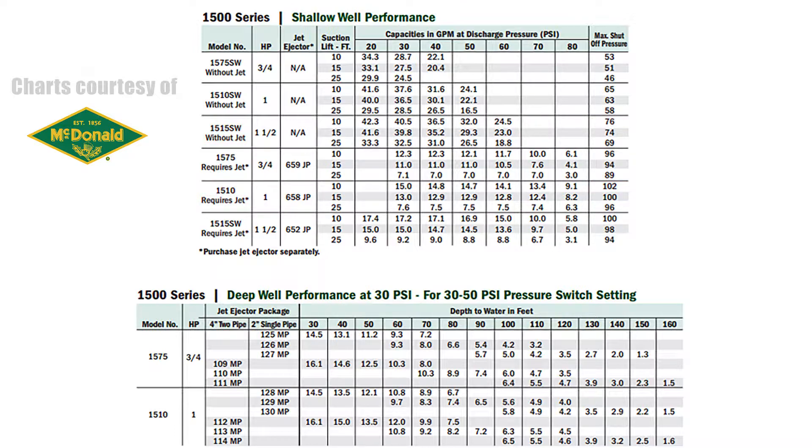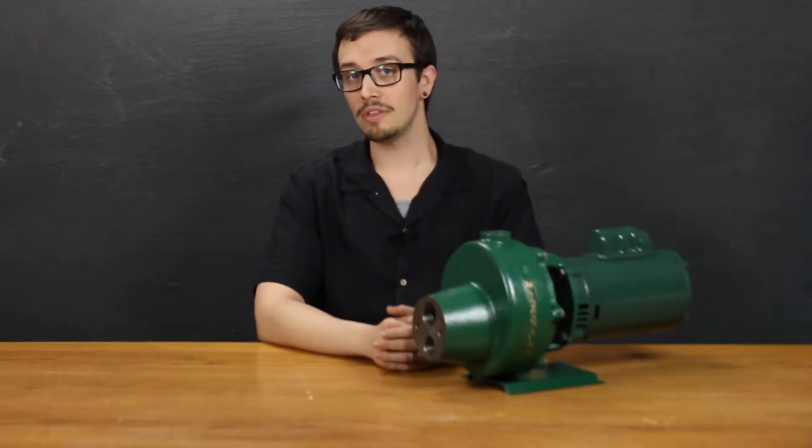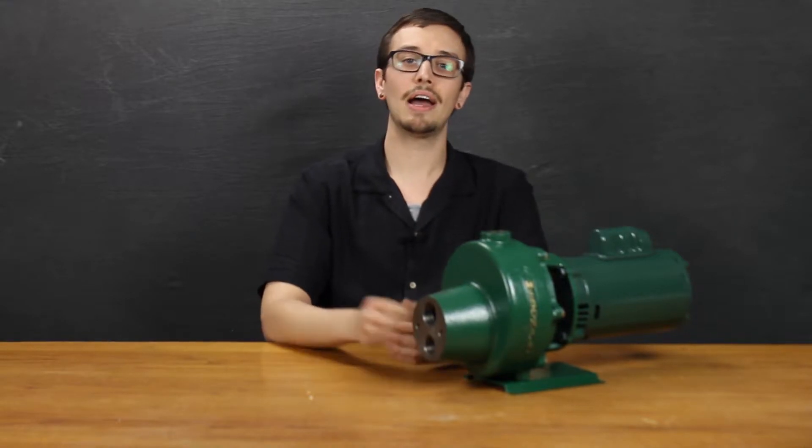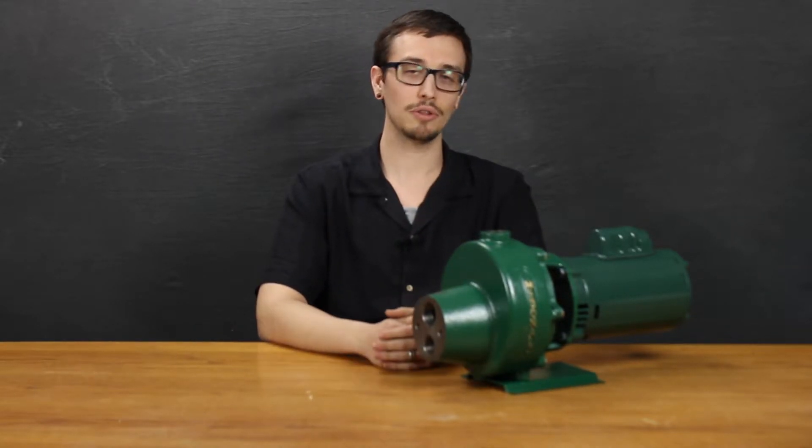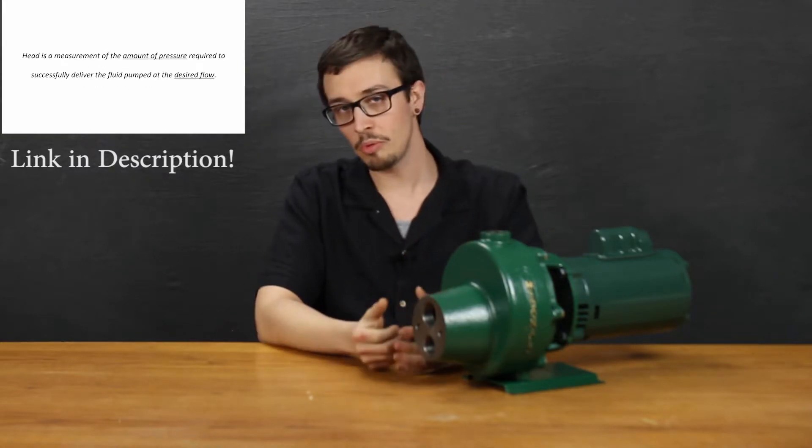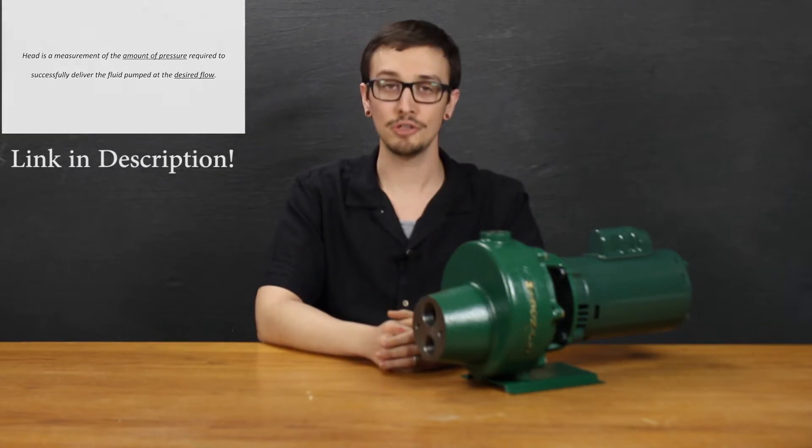The maximum flow with the jet is 17 gallons per minute and 42 gallons per minute without. Typically, the shallow well jet is used in applications where you need to achieve a higher head pressure and don't mind sacrificing a little bit of flow. If you're a little hazy on the details of pump head, we've prepared a video. You can find that in the description below.